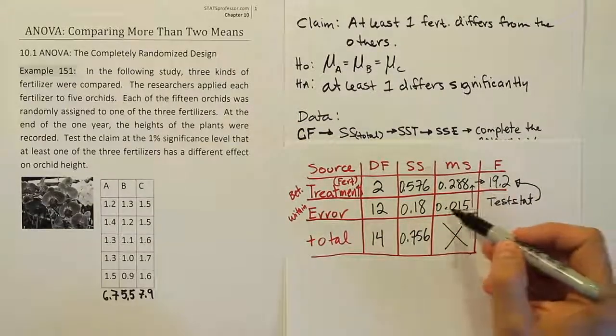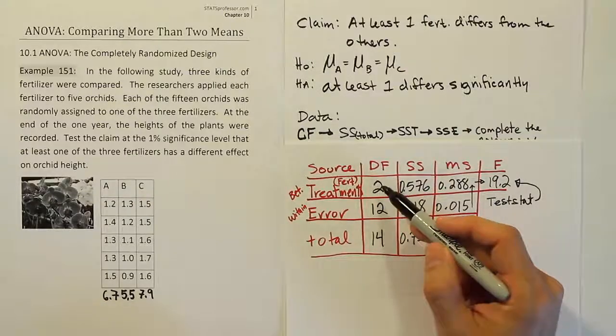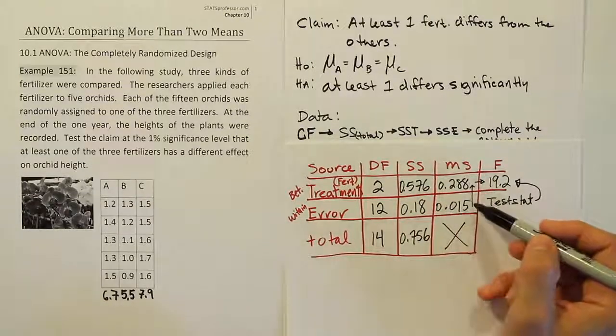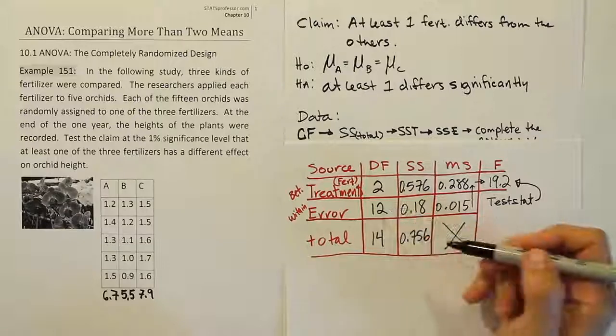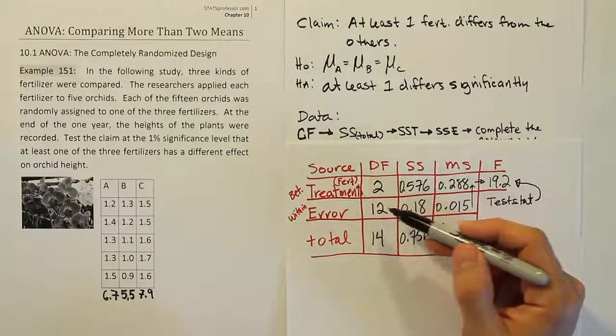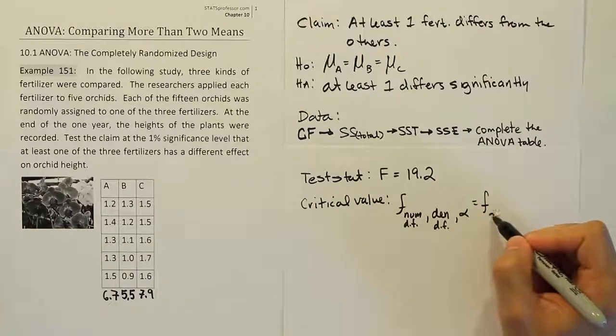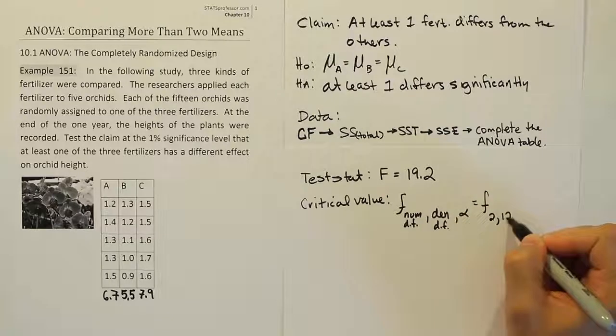When we did that then, we're going to take the degrees of freedom then as the numerator to be the top number's degrees of freedom, which will be 2. And the denominator degrees of freedom is going to be the bottom number, which is 12. So this kind of looks like a fraction to remind us, numerator, denominator, right? So 2, 12 is what we need for this position here. So it's going to be F, numerator degrees of freedom, 2, denominator degrees of freedom, 12.